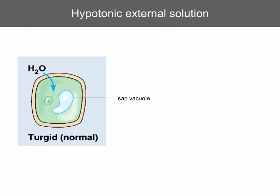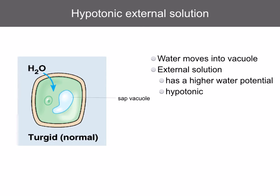Let's go through it step by step. In a hypotonic solution such as pure water, water moves into the cell and then into the vacuole, as the external solution has a higher water potential. The protoplast pushes on the cell wall. The cell wall stretches slightly but resists further expansion, so the pressure potential increases and resists further expansion — the cell is now turgid.